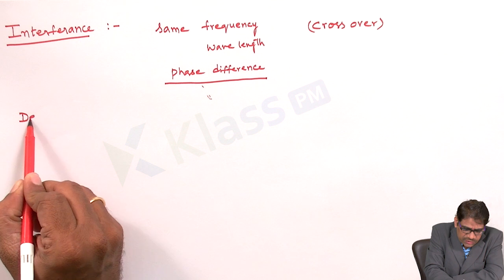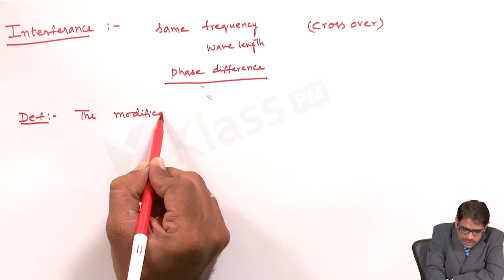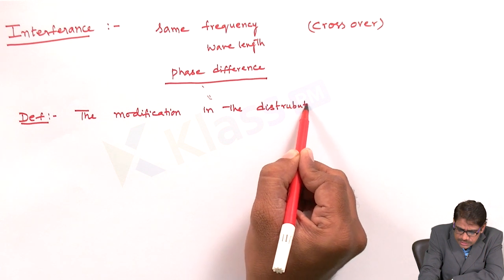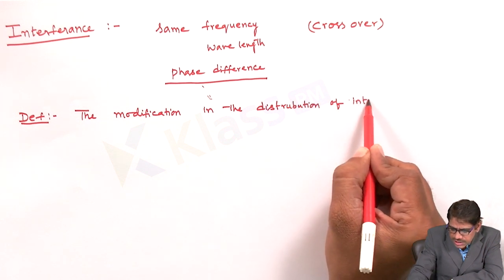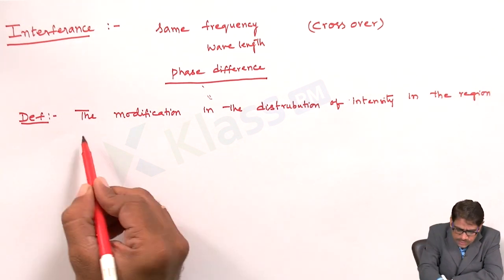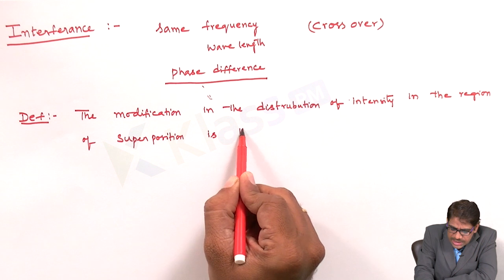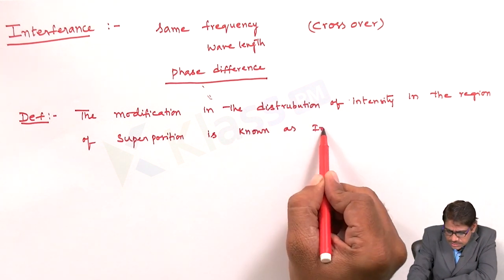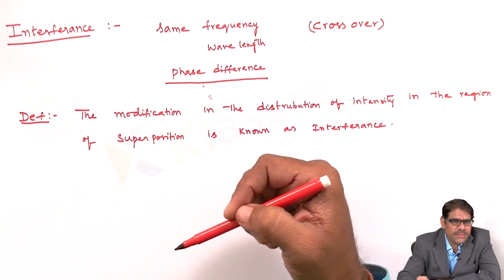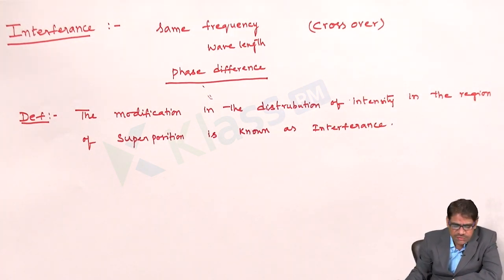As far as the actual definition is concerned: interference is the modification in the distribution of intensity in the region of superposition. The intensity gets distributed within the superposition region, which we also call the crossover region. This is the definition of interference.